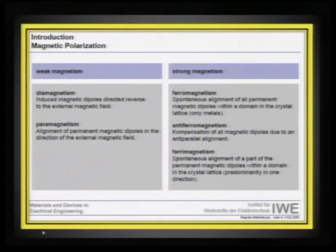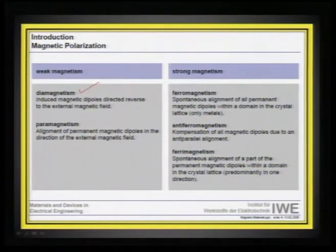Weak magnetic response — diamagnetism and paramagnetism — usually describes the influence of an external field on the material, whereas strong magnetism is an intrinsic response of the material itself. Although diamagnetism shows a very poor net magnetic moment, it can be used for sophisticated applications. For example, in magnetically levitating a train, the materials used have to be diamagnetic. So diamagnetism is as much used and exploited as a strong ferromagnetic material.